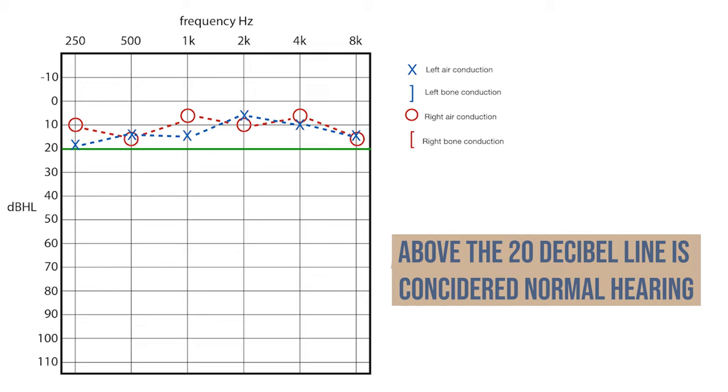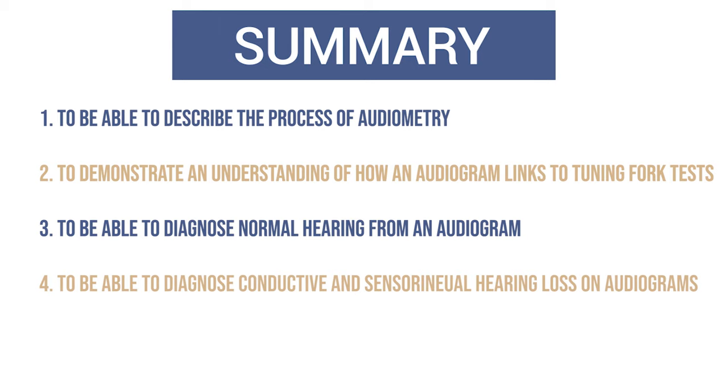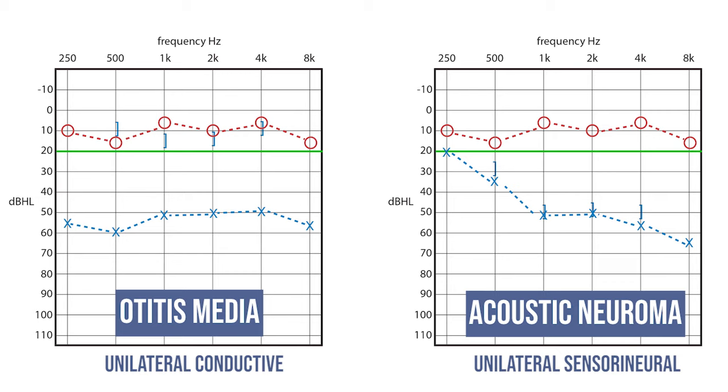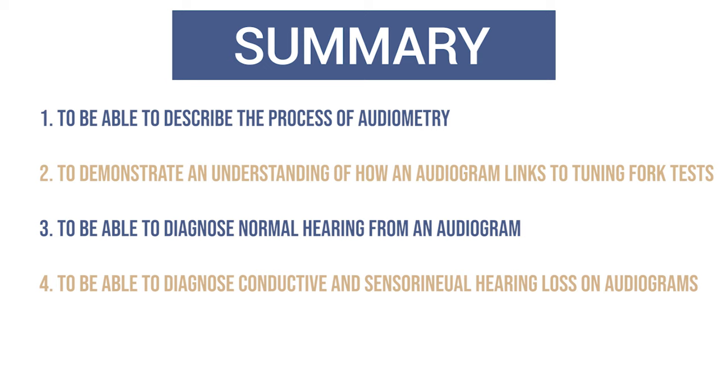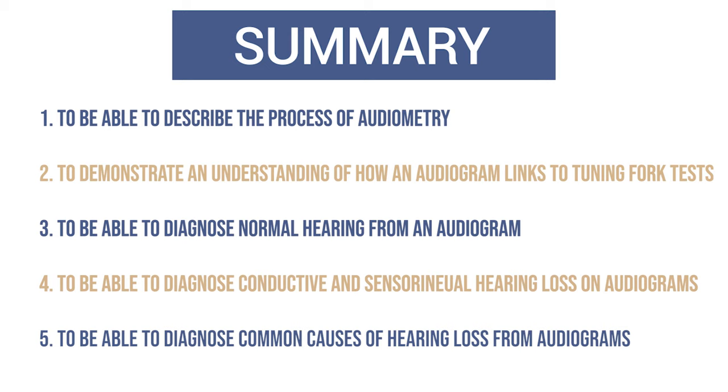Third was to diagnose normal hearing from an audiogram. The plot points for both ears should be above the 20 decibel line. Fourth was to be able to diagnose conductive and sensorineural hearing loss on audiograms. When air conduction is abnormal, look at the bone conduction markers. If they are normal, then this is conductive, such as otitis media. However, if they follow air conduction and are abnormal, this is sensorineural, as in an acoustic neuroma.